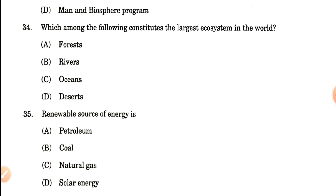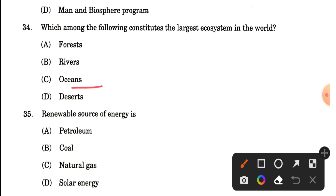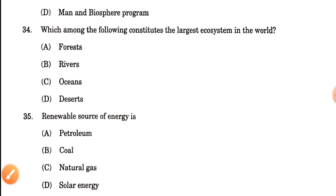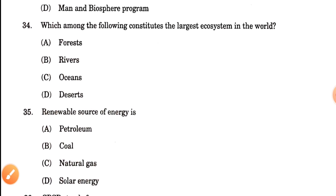Question number 34: Which among the following constitutes the largest ecosystem in the world? This is a very easy question — it is the ocean. The ocean ecosystem is the largest ecosystem in the world. Option C is the correct answer.